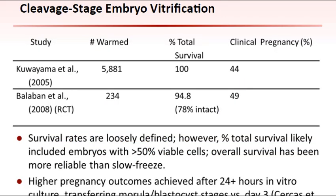Early in its clinical application, Kuayama and coworkers demonstrated the effectiveness of cryopreserving cleavage stage embryos by vitrification in open and closed systems. Survival was loosely defined based on slow-freeze history, likely encompassing any embryo with 50% or more of its original cell number. Subsequently, Balaban more accurately assessed the overall effectiveness of embryo vitrification, finding that 78% were completely intact, while the remaining experienced one or more degenerate cells, not exceeding 50% of the total cell number. Comparable pregnancy rates were attained in the two studies. Another study found advantages with greater than 24 hours of in vitro culture, allowing for the selection and transfer of morula or blastocyst stage embryos, with both pregnancy and implantation rates being significantly higher than day 3 transfers.